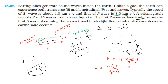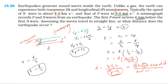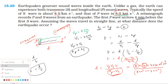Substituting values: velocity of P wave is 8 km per second, velocity of S wave is 4 km per second, and time is 4 minutes, which is 4 into 60 seconds. Converting units: 8 km per second is 8 into 10 to the power 3 m per second, and 4 km per second is 4 into 10 to the power 3 m per second. Vp minus Vs is 8 into 10³ minus 4 into 10³ m per second.